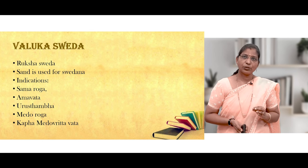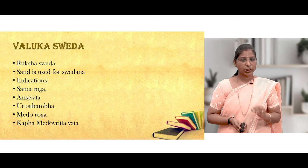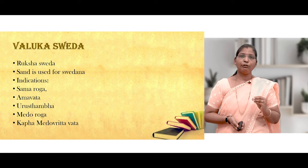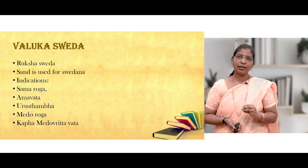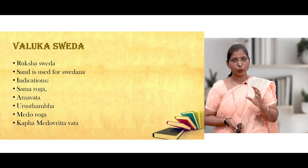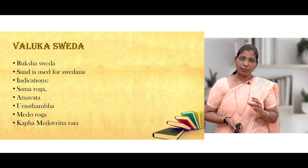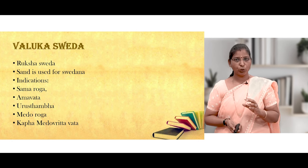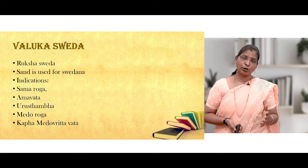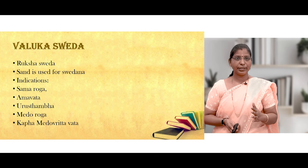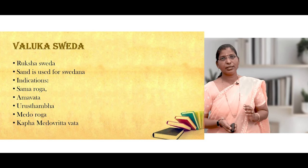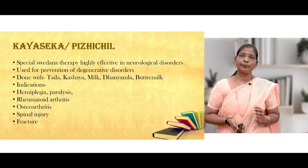Valuka Sveda is the most Ruksha type of Sveda, using sand for Svedana. Indications are Samavata or Samaroga, Amavata, Urusthamba, Medoroga, and Kapha-Medavuruta Vata where Sneha is contraindicated — Valuka Sveda is ideally indicated in these conditions.